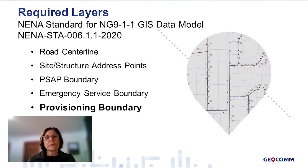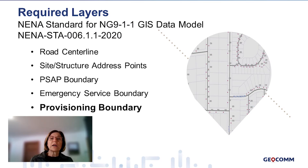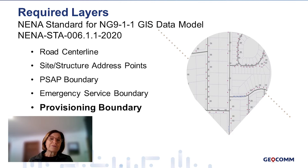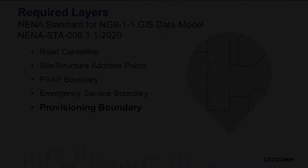The provisioning boundary is one of five required data layers in NENA's NextGen 911 GIS data model. It's a polygon layer, and it defines the area of responsibility for provisioning GIS data up into the network.